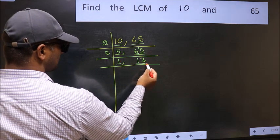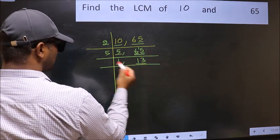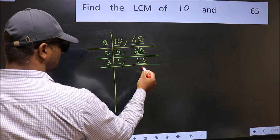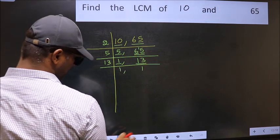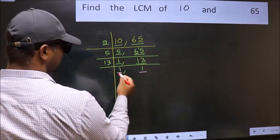Now we got 1 here. So focus on the next number 13. 13 is a prime number. So 13 once 13.